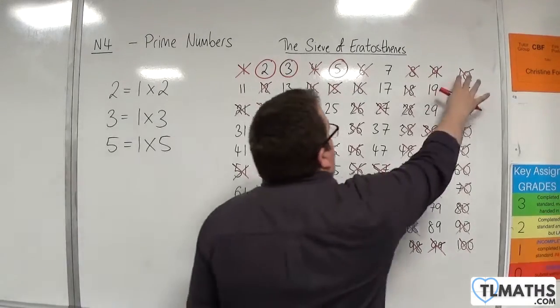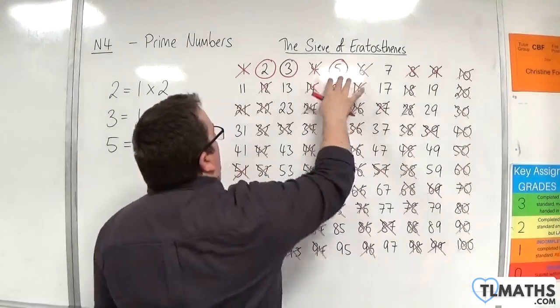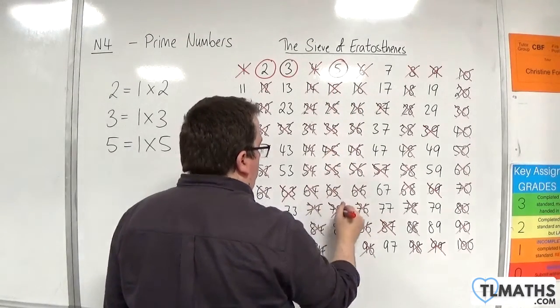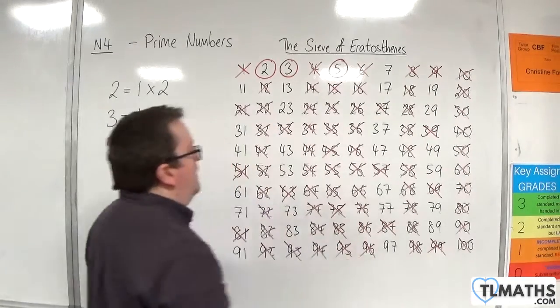Now I've already crossed off all of those. So it would be five, fifteen, twenty-five, thirty-five, forty-five, fifty-five, sixty-five, seventy-five, eighty-five, ninety-five. They're all gone.